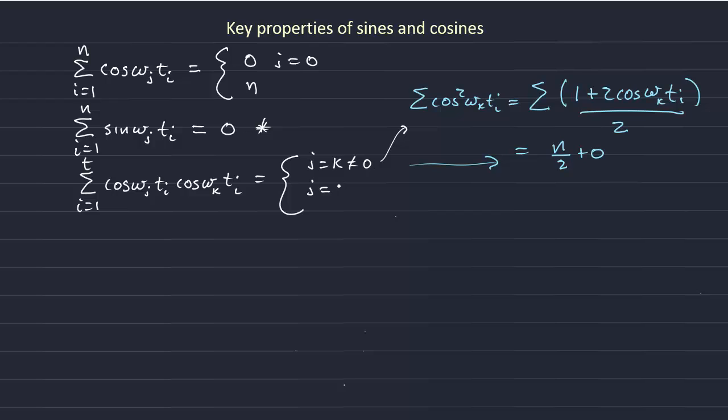When j is equal to k, and they are equal to 0, then the cosine of 0 is 1. If we sum 1 n times, the answer we get is n.